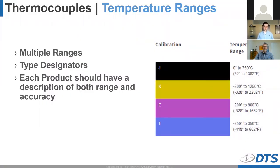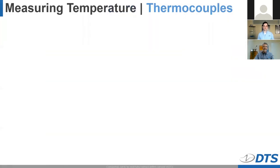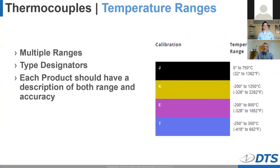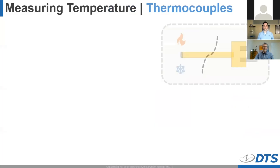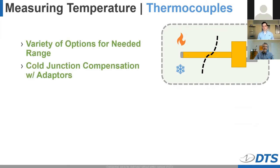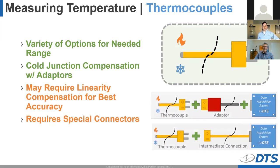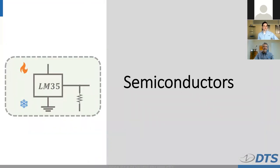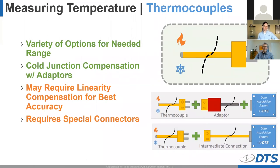One of the great advantages of thermocouples is the wide range of classifications based on the temperature range they can accurately cover. If you go to a manufacturer site like Omega, they will break down the types of thermocouples and corresponding ranges. In this table I've shown the common types — K being one of them, but J, E, and T are also displayed. Some main points with thermocouples: they have a good range for different temperatures. The cold junction effect can be easily accounted for with adapters. It may be necessary to have linearity compensation, and it's possible you'll need special connectors.